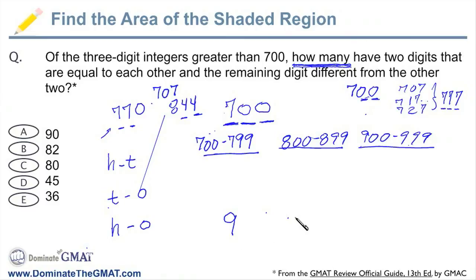And then you start to recognize a pattern. Isn't that going to be the case all the way across the board? It's going to be the same in the 800s: 808, 818, 828, 838, 848. 10 of them.